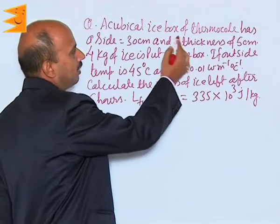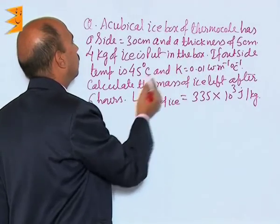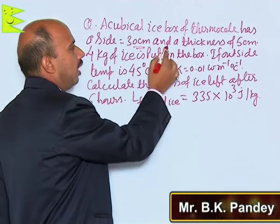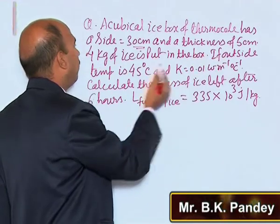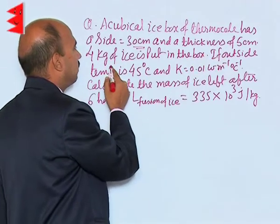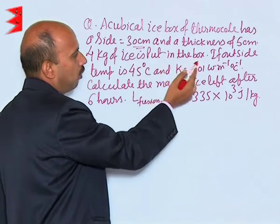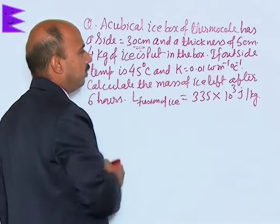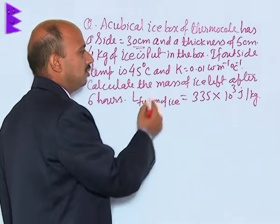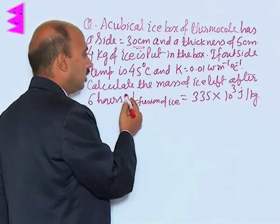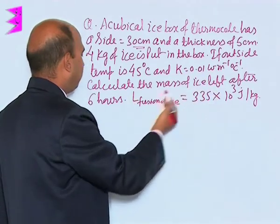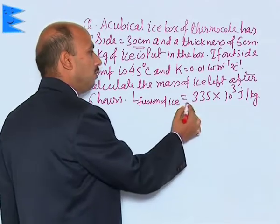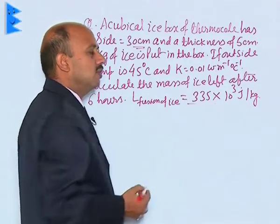A cubical ice box of thermocool has a size of 30 centimeters and a thickness of 5 centimeters. 4 kg of ice is put in the box, and if outside temperature is 45 degrees Celsius and k is equal to a given value, calculate the mass of ice left after 6 hours. The latent heat of fusion of ice is also given.